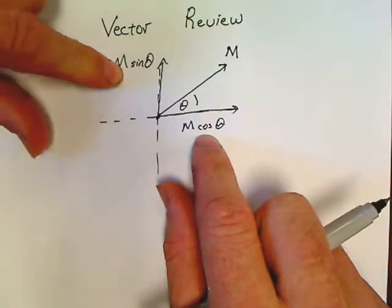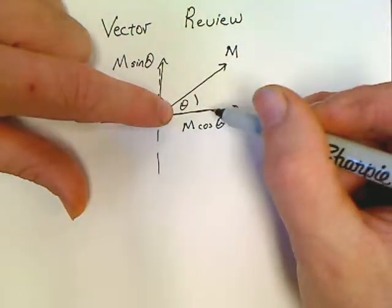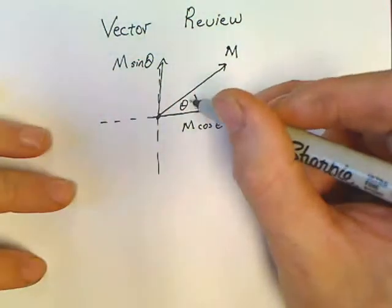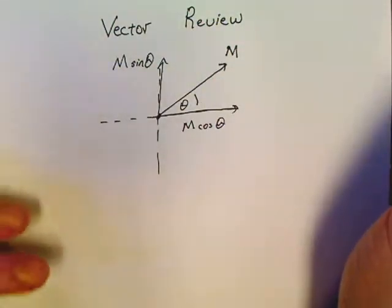Now, this always works, cosine for X, sine for Y, as long as this angle is off of the X axis. If that angle comes off of this axis, I would subtract from 90 and get that angle just to make it easier.